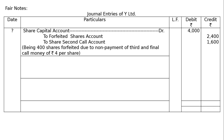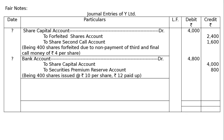These shares are reissued at rupees 12 per share, meaning at a premium. The next entry for reissue: Bank Account debited — 400 shares into rupees 12, that is rupees 4800. To Share Capital Account — called up value: 400 shares at rupees 10, that is rupees 4000. To Securities Premium Reserve Account — 400 into 2, that is rupees 800, being 400 shares issued at rupees 12 per share fully paid up.